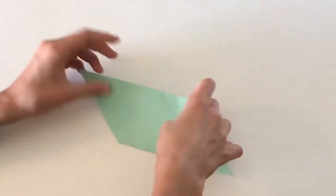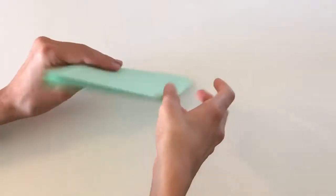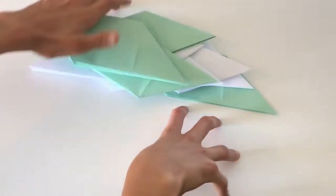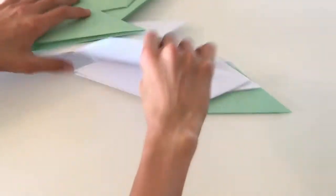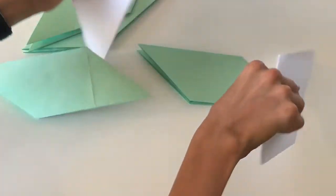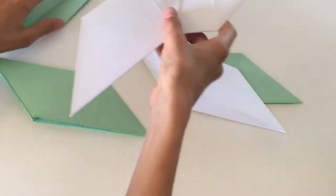Okay and already you have one connector piece done. So I'm going to grab the other pieces right here. Here's all eight so we're going to need another white piece for this next step.